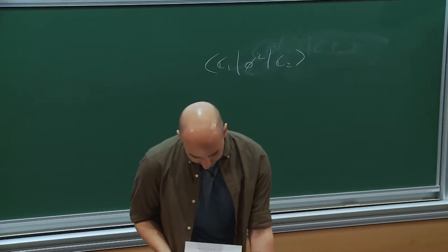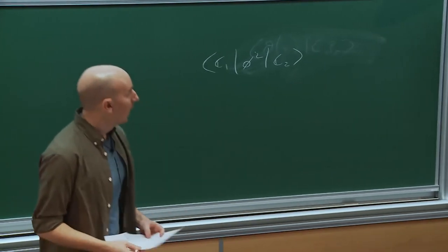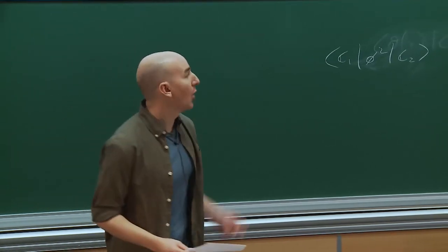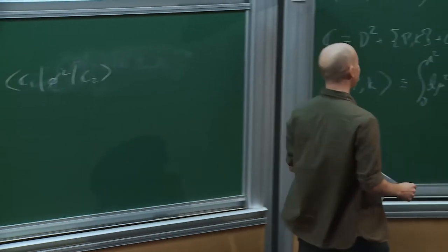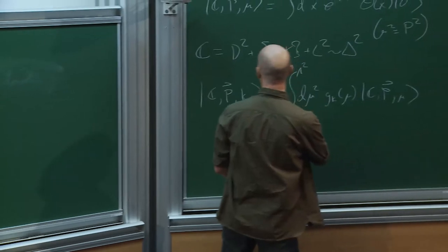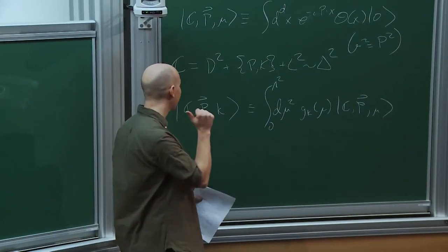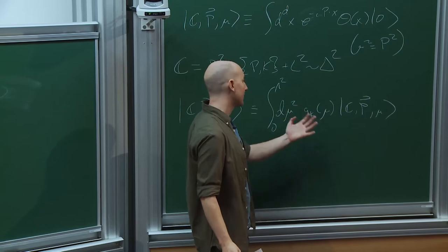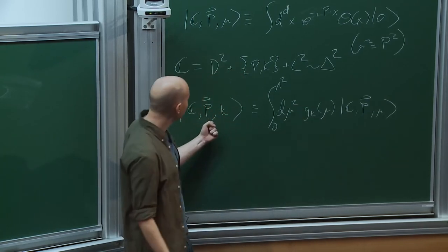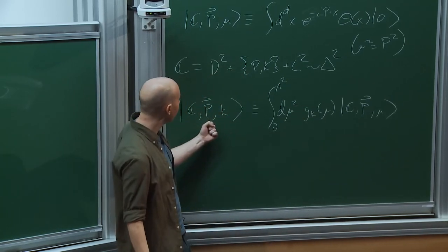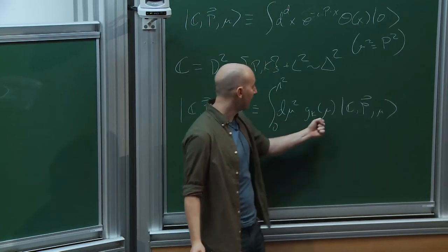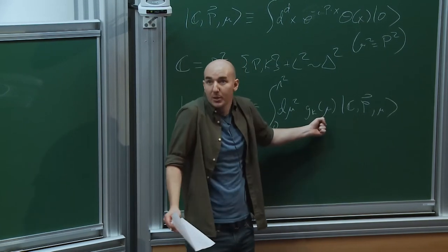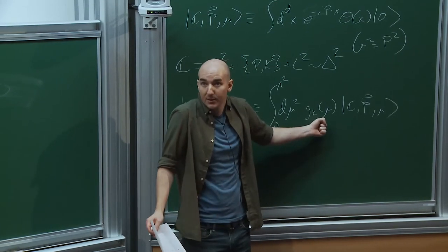To answer the question about G_k: you define a discrete basis by integrating the continuum against weight functions G_k. You definitely need to discretize in some way, and when you do, you introduce a UV cutoff lambda squared. The important thing is that this is a Lorentz invariant cutoff. In contrast to TCSA, I don't have to worry about non-local counterterms arising from this cutoff lambda.